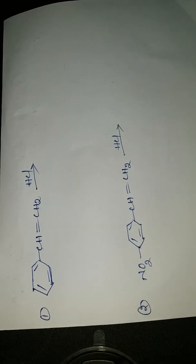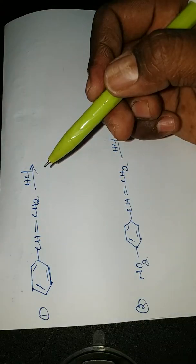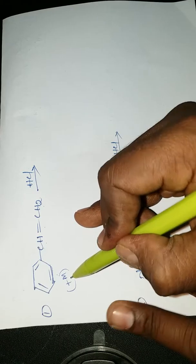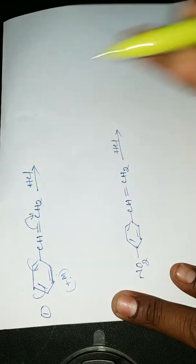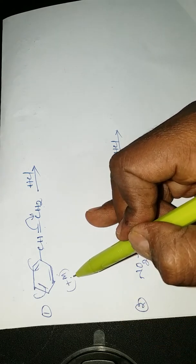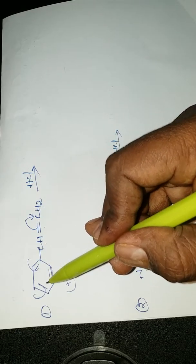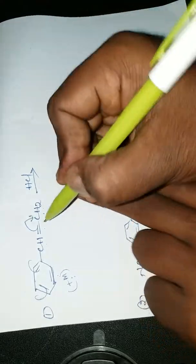Electrophilic addition reaction. Here we have benzene-CH=CH₂ (styrene). In this equation, the role of benzene is that it belongs to the plus mesomeric effect, which means it is an electron releasing or electron donating group. That's why electrons are donated towards the right hand side — that is the role of benzene.